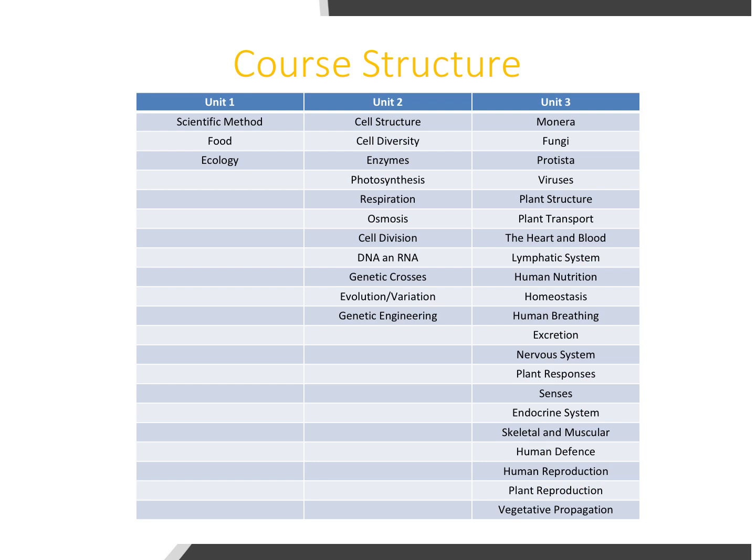Now let's look at the core structure, because this is really important for the layout of the final exam and can help you maximize your marks. There are three units in the biology syllabus. Unit 1 comprises just three topics: scientific method, food, and ecology. Unit 2 is a bit longer — we have everything to do with the cell, DNA and RNA, and also photosynthesis and respiration, two of the biggest topics. And then Unit 3 has a huge amount of content: the kingdoms of life, all of the animal systems, and plants — massively big topics.